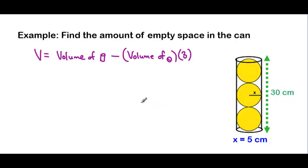And we're going to have three of them. So when we find our total volume here, or our volume of empty space, is going to be the volume of our cylinder but subtract the volume of all three of these tennis balls.